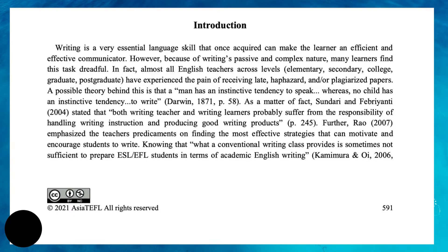For example, using the research paper of Tan and Bensal (2021), in their introduction they stated: 'Writing is a very essential language skill that, once acquired, can make a learner an efficient and effective communicator.' That is part of the background. However, because of writing's passive and complex nature, many learners find this task dreadful. This is where the discussion of the problem around the research topic begins, and you can elaborate further using different empirical papers.